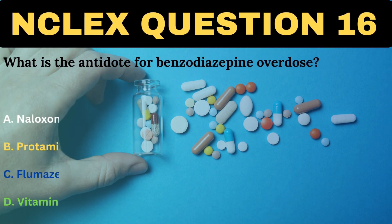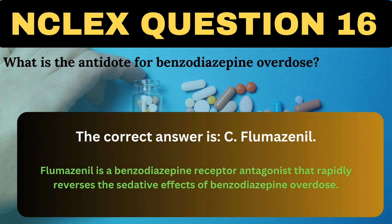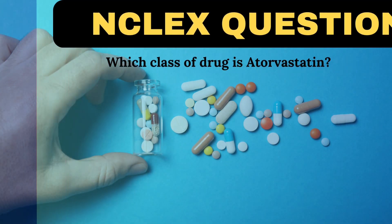What is the antidote for benzodiazepine overdose? A. Naloxone. B. Protamine sulfate. C. Flumazenil. D. Vitamin K. The correct answer is C, Flumazenil. Flumazenil is a benzodiazepine receptor antagonist that rapidly reverses the sedative effects of benzodiazepine overdose.